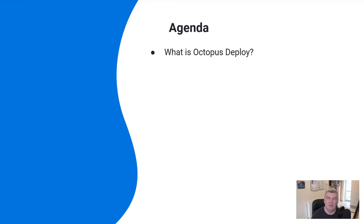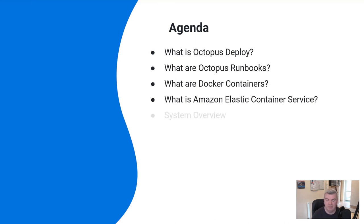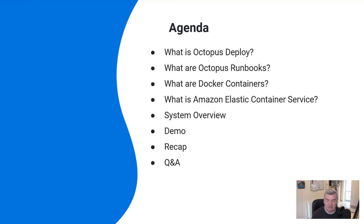I'll give you a brief introduction about what Octopus Deploy is, and we're also going to be using runbooks so I'll talk about how we can use them. ECS is predicated heavily on containers, so I'll give a brief introduction to Docker containers, then leap into what ECS actually is and its component parts. I'll give you a brief system overview of what we've got built up for the demo, then we'll have demos with hands-on stuff running up and deploying things. Once finished, I'll give a recap and then we'll have Q&A.